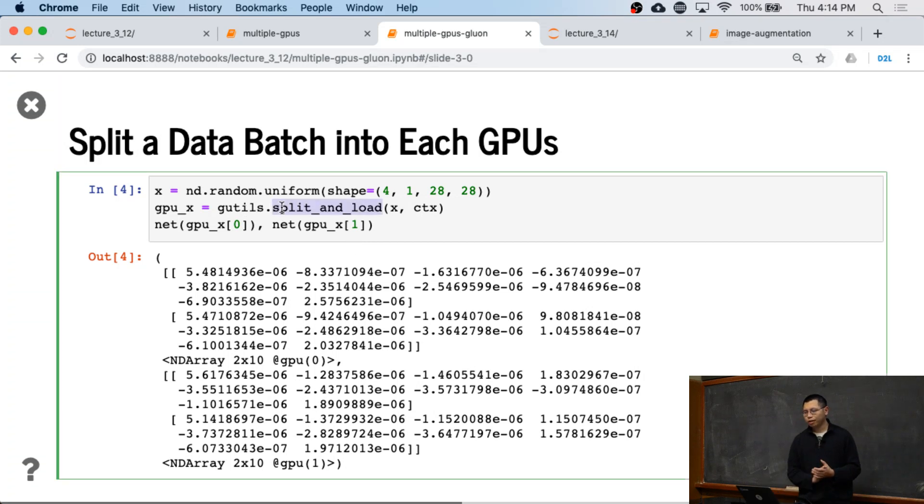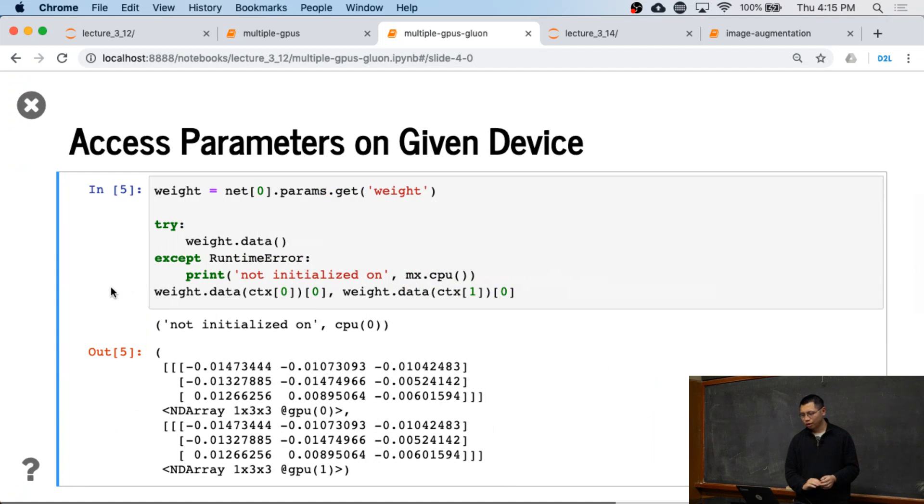So here, the Gluon has split and load function here. We don't need to re-implement that again. So remember that we initialized on multiple things. Now let's see how it works. So firstly, we didn't initialize on CPUs. If you're going to get the weight and the core data, you're going to get the runtime error because it's not initialized on CPU. In default, you cannot copy the data on CPU. But we can do that. For data, we can pass the context to that to fetch the parameters initialized on a particular device. So you can see that past context 0, we've got the data initialized on GPU 0, and the weight on data context 1, the weight initialized on GPU 1.